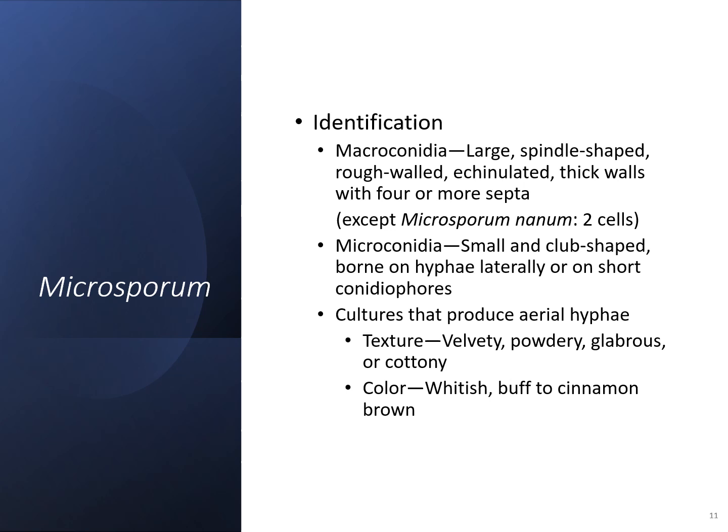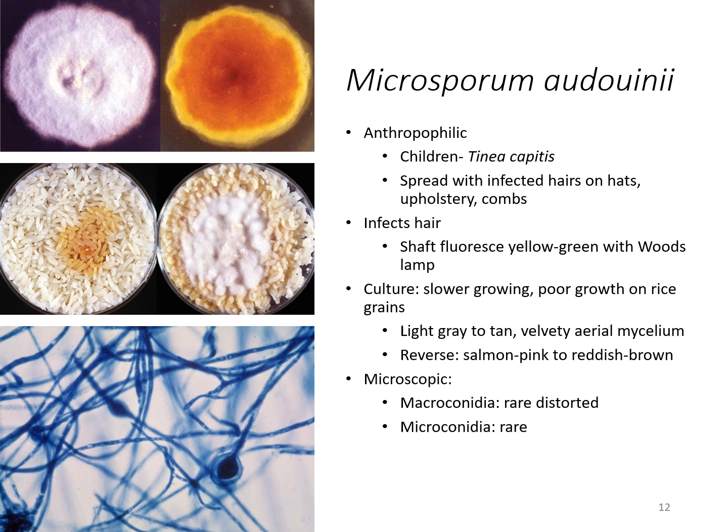Microsporium audouinii is passed man to man and has been associated with children with Tinea capitis. It can be transmitted through infected hairs on hats, upholstery, combs — just children sharing things. It infects the hair shaft and will actually fluoresce under the Woods lamp.